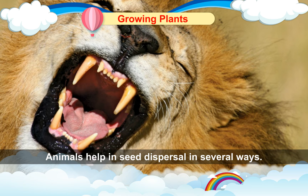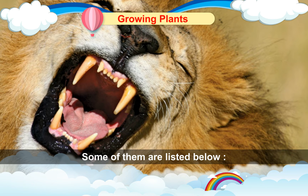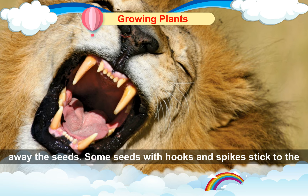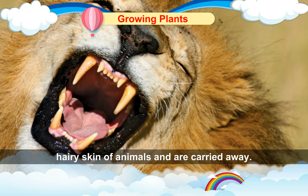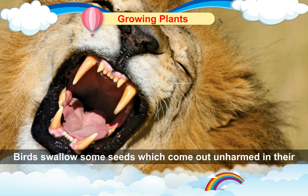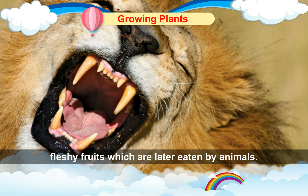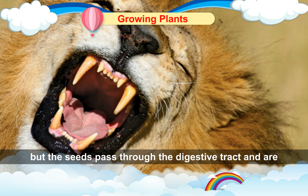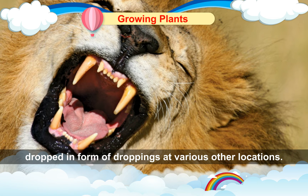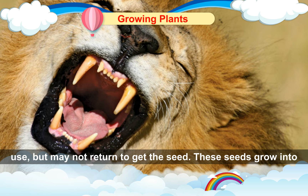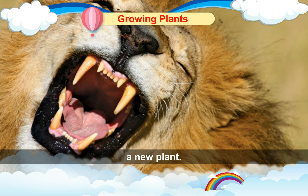Animals help in seed dispersal in several ways. Human beings and animals eat fruits like cherries and throw away the seeds. Some seeds with hooks and spikes stick to the hairy skin of animals and are carried away. Birds swallow some seeds which come out unharmed in their droppings. Some plants produce their seeds inside fleshy fruits which are later eaten by animals. The fruit gets digested but the seeds pass through the digestive tract and are dropped in the form of droppings at various other locations. Some animals like squirrels bury seeds to save them for later use but may not return to get the seed. These seeds grow into new plants.